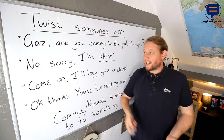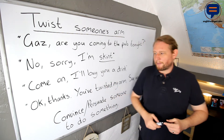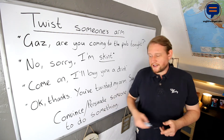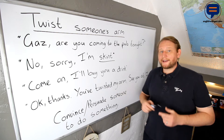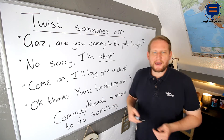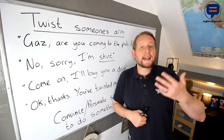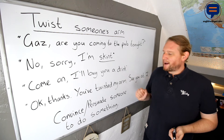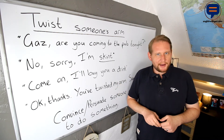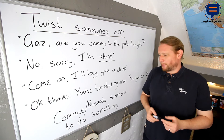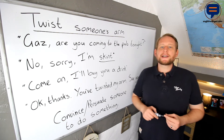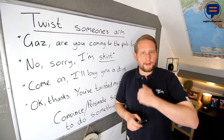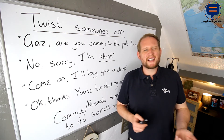So in this case, my friend twisted my arm. All this means is that he convinced me or persuaded me — these are both verbs which mean to basically make somebody do what you want them to do. So my friend persuaded me to come and have a drink at the pub. To twist somebody's arm means to make them do something that they really don't want to do.